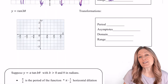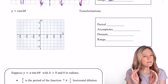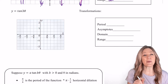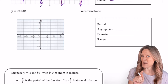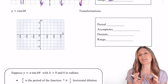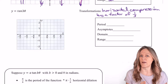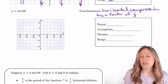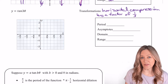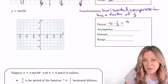Now let's look at dilations. We have tangent of 3 theta. That's inside with the input value, the x value, so we know it's going to be a horizontal transformation. Remember when it's inside with the x, it's the reciprocal — so I have a horizontal compression by a factor of one-third. Knowing that the period of tangent is pi and that I have a horizontal compression by a factor of one-third, I multiply: pi times one-third, so my new period will be pi over 3.